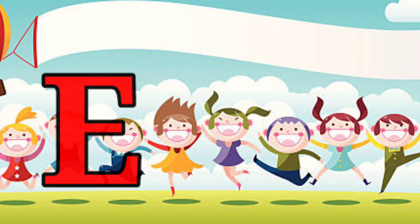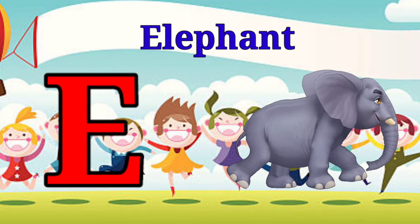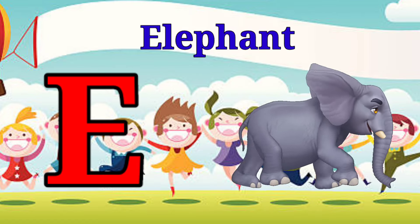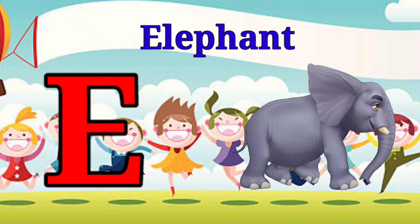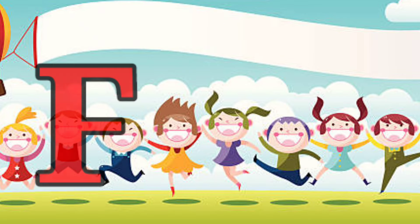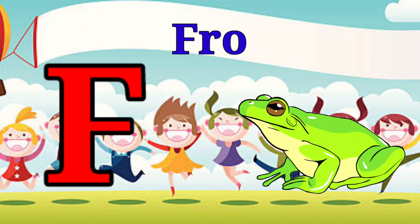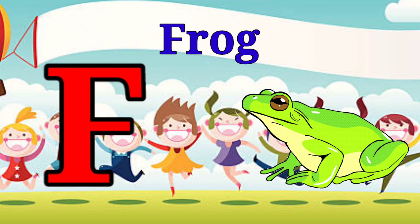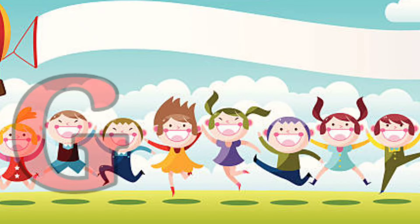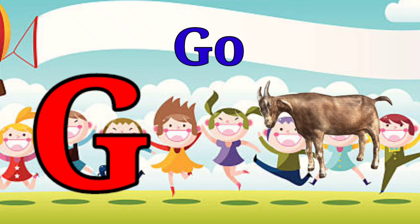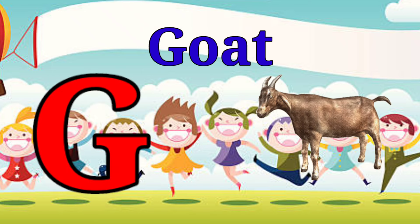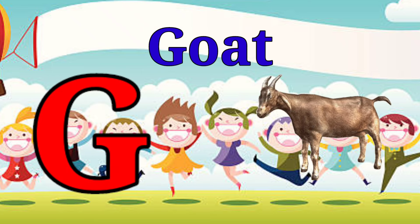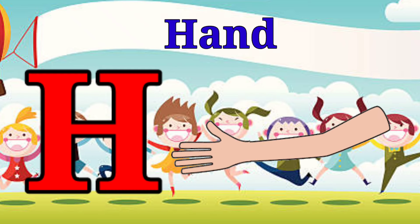E is for elephant, e-e-elephant. F is for frog, f-f-frog. G is for goat, g-g-goat. H is for hand, h-h-hand.